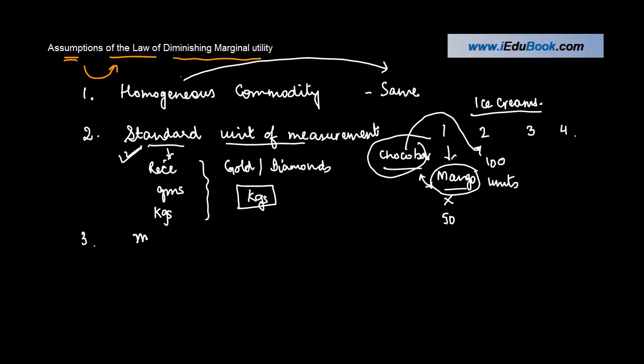Third, the mental or social condition should be normal. It's assumed that as you are going through each of these consumption, your mental and your social conditions are normal. What does this mean? If suppose you have a choco bar or if suppose you have a mango and you are very sad, it's likely that you may not get actually this 50 units of consumption as well. You might just get 30.